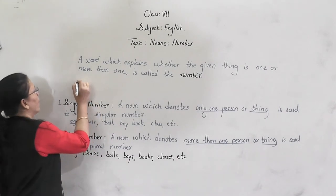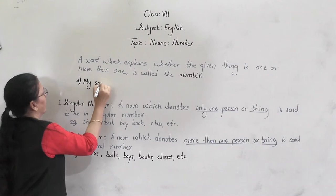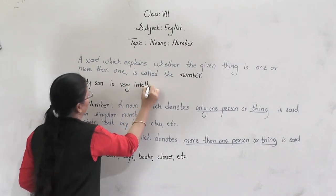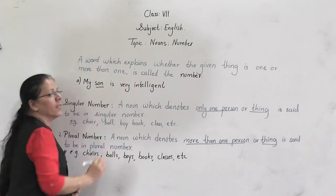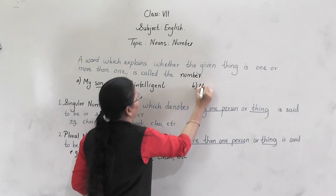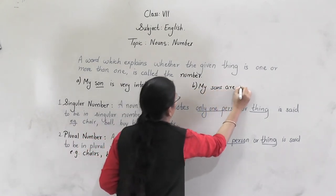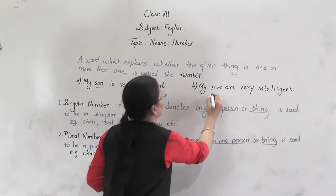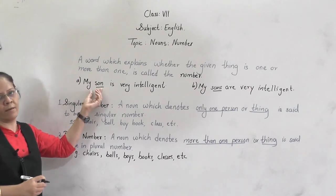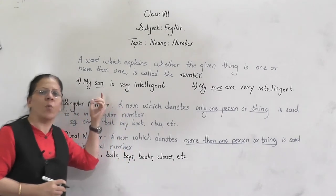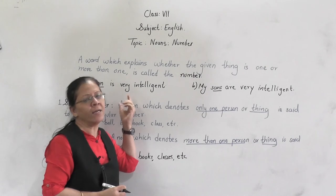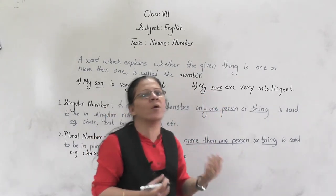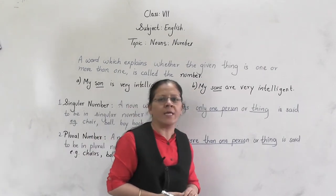For example: 'My son is very intelligent.' Here you can see the word 'son'. Another example: 'My sons are very intelligent.' In the first example, 'son' denotes only one — it talks about one son. Hence, this noun is said to be in singular. In the second example, 'sons' is more than one. Hence, this noun is said to be in plural number.